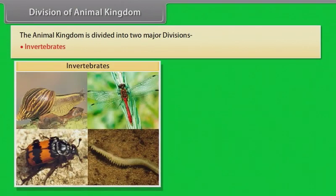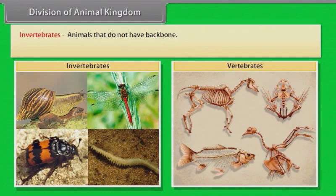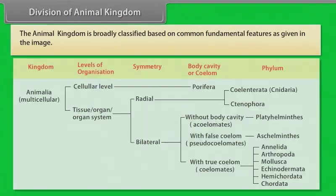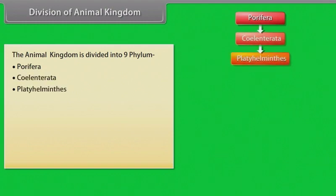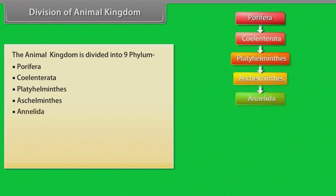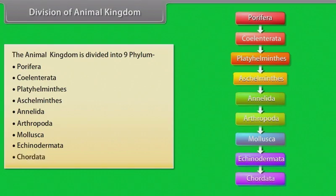Division of the Animal Kingdom: The animal kingdom is divided into two major divisions — invertebrates, animals that do not have a backbone, and vertebrates, animals which have a backbone. The animal kingdom is divided into nine phyla: Porifera, Coelenterata, Platyhelminthes, Aschelminthes, Annelida, Arthropoda, Mollusca, Echinodermata and Chordata.